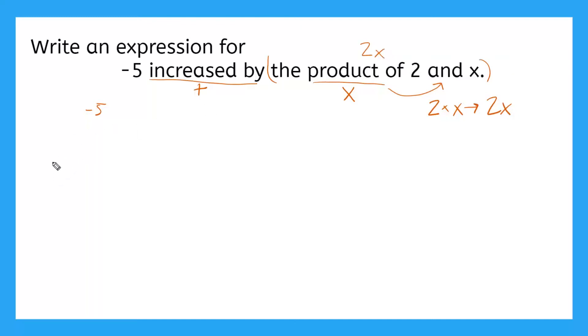So I have negative five, I have a plus sign, and I have two x. So what order can these go in? That's right, since this is addition, it can go in any order, right? So negative five plus two x would be our mathematical translation.